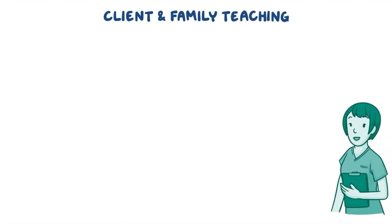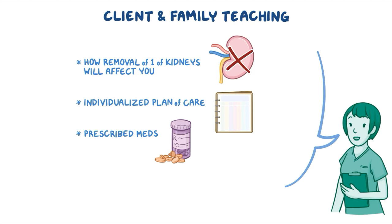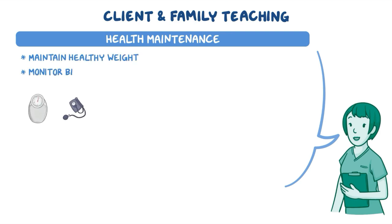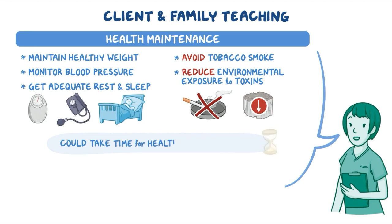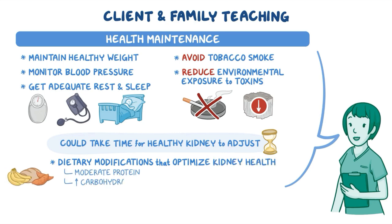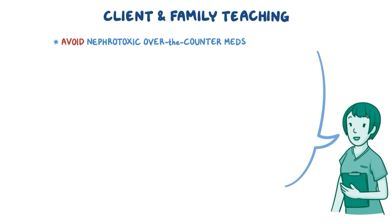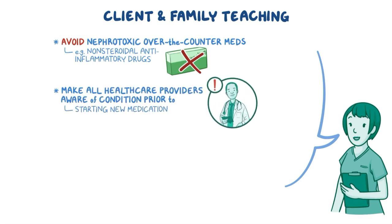For client and family teaching, begin by explaining how the removal of one of their kidneys will affect them and review their individualized plan of care. Go over each of their prescribed medications and instruct them to take them exactly as directed. Counsel them on the importance of health maintenance, including maintaining a healthy weight, monitoring their blood pressure, getting adequate rest and sleep, avoidance of tobacco smoke, and reducing environmental exposure to toxins. Remind them that it could take time for their healthy kidney to adjust and stress the importance of dietary modifications, including eating a moderate protein, high carbohydrate, low fat, and low sodium and potassium diet. Advise them about nephrotoxic over-the-counter medications to avoid, such as NSAIDs, and the importance of making all health care providers aware of their condition prior to starting a new medication or undergoing imaging with contrast dye.